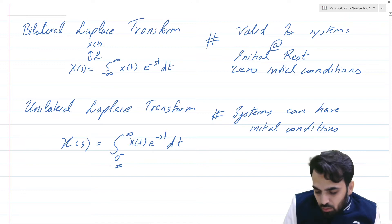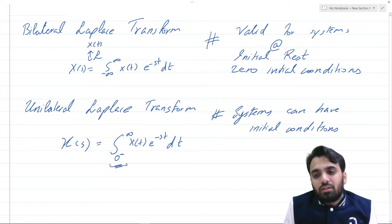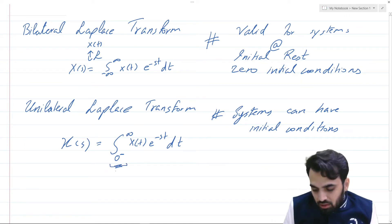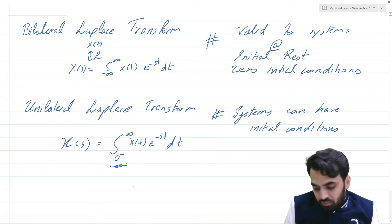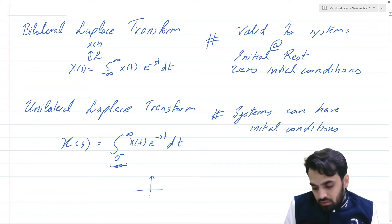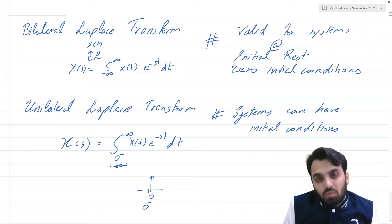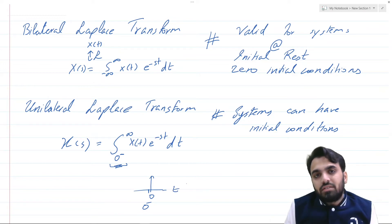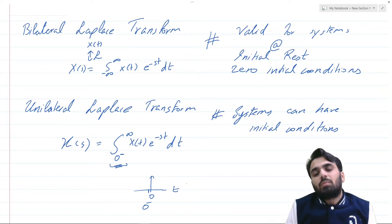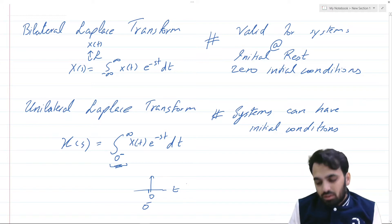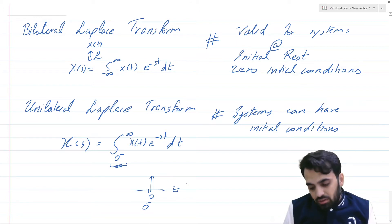We use 0 minus rather than 0 or 0 plus because we can have systems with singularities at the origin — for example, an impulsive function at time 0. So by starting from 0 minus, we include that kind of function. Most things studied in the bilateral Laplace transform translate easily to the unilateral Laplace transform; the only difference is in terms of the lower limit of integration.